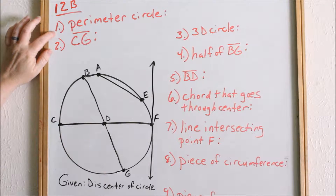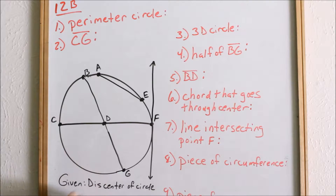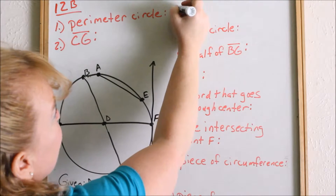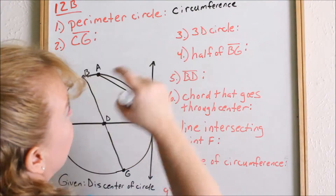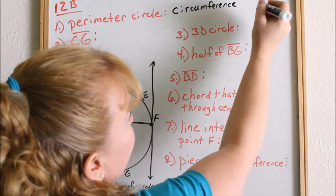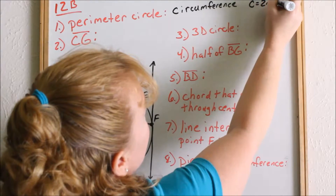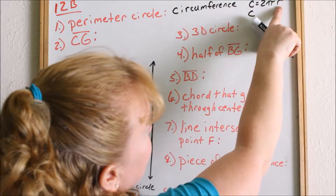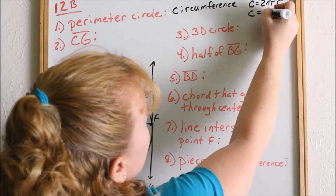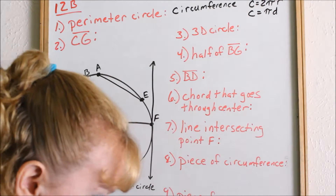If you look at number one, the perimeter of the circle — we learned that the perimeter is the outside, going around the outside of something. The perimeter of a circle has a special name; it's actually called the circumference. The circumference formula, if you want to put this on your formula card: circumference equals 2 times pi times the radius. Or, since 2 times the radius equals the diameter, you can say circumference equals pi times D. Those are two different ways to write the formula for circumference.